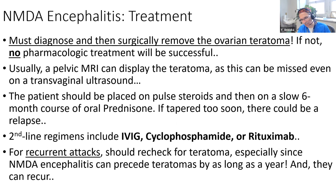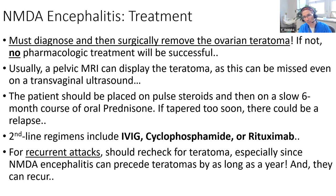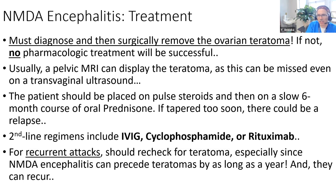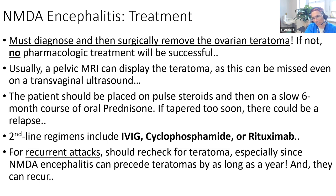For treatment, you can use IVIG, steroids, rituximab, or plasma exchange. If it's paraneoplastic, you must remove the teratoma - otherwise the patient will keep producing autoantibodies and no pharmacologic treatment will be successful. Finding the teratoma is tricky - we do pelvic MRI but can miss small ones, so we also use transvaginal ultrasound. Sometimes we'll even prophylactically remove ovaries if nothing is seen because microscopic teratomas can present with clinical features of autoimmune encephalitis months or up to a year before a gross teratoma appears on imaging.